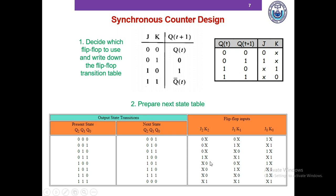To complete the next state table, we determine which J and K values can cause the present state to next state transition for each flip-flop. In the first row, Q2 transitions from 0 to 0. Looking at the transition table, a 0-to-0 transition requires J=0 and K=X. Therefore we write 0X and move to the next row.